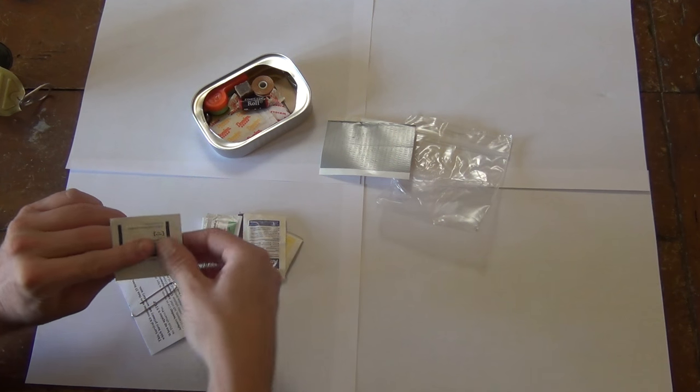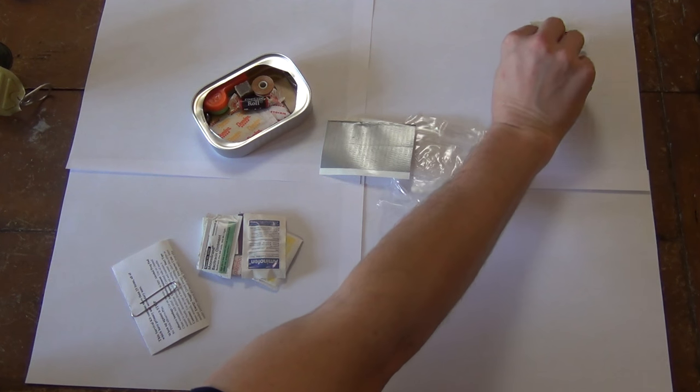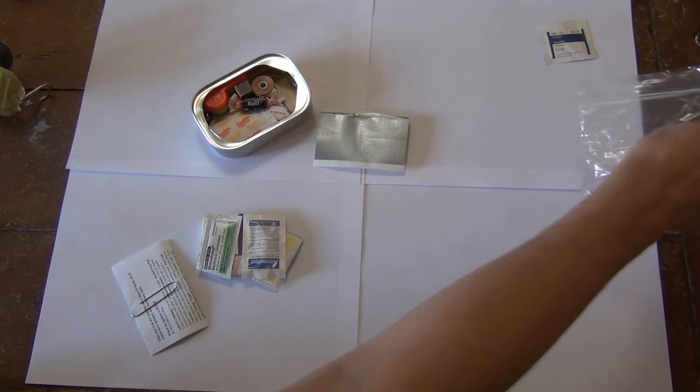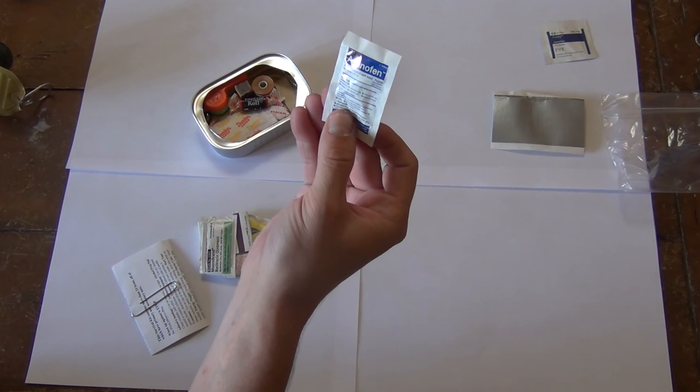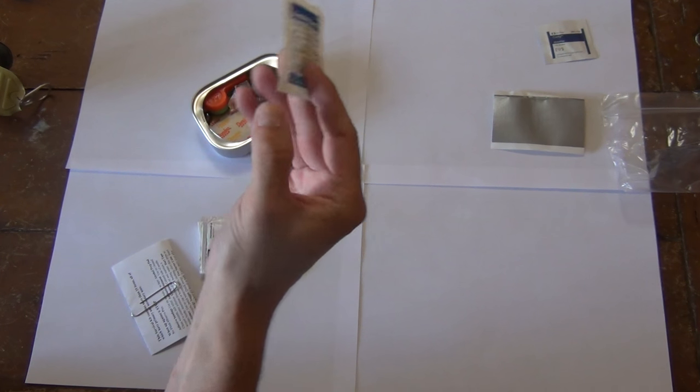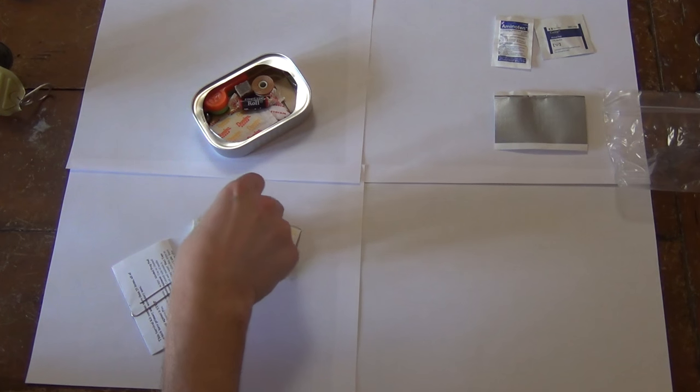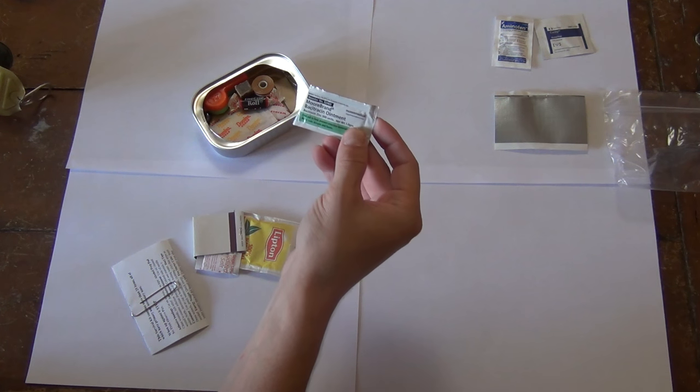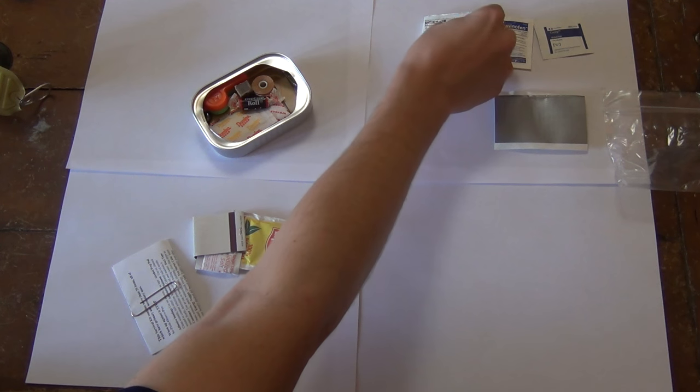Here we have an alcohol prep pad. Here we have ibuprofen, I guess this is acetaminophen or whatever, like a Tylenol. Here is antibacterial ointment to put on band-aids.